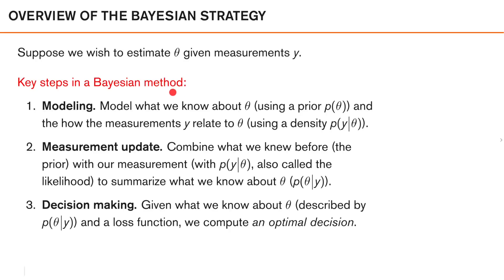The key steps in Bayesian methods are that we first model everything that we need. In this case, we need two models. The first model describes what we know about theta before making any observations, and we do this using what's called a prior, which is the distribution p(theta). In the example of the Eiffel Tower, we would say that we know the height is somewhere between 250 and 350 meters, and we describe this knowledge using our prior distribution. The second model is a probabilistic model of how the measurements y relate to theta, using the probability density of y conditioned on knowing theta. As we're often interested in this as a function of theta — and note it is not a probability density over theta but over y — we call this the likelihood of theta.